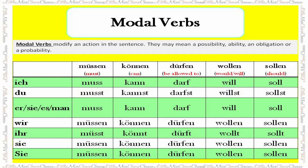Modal verbs modify an action in the sentence. They may express possibility, ability, obligation, or probability. Most of the time we use modal verbs with the main verb of the sentence. The main verb of the sentence is in its infinitive form, meaning we do not conjugate it. Lastly, the infinitive verb is always at the end of the sentence. Now let us read these common modal verbs.